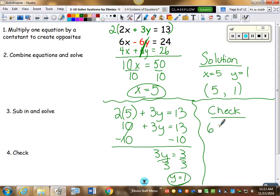And our check. So 6 times 5 minus 6 times 1, and we want to know if that equals 24. So 30 minus 6 is, in fact, 24. I know that I did this right. So that's kind of a medium-level problem because all I had to do is multiply the top equation by 2, and then I got 6's to match and cancel.